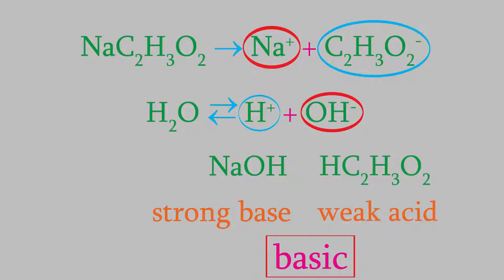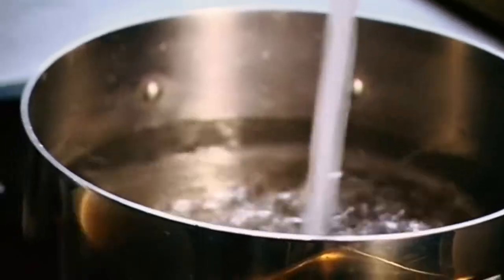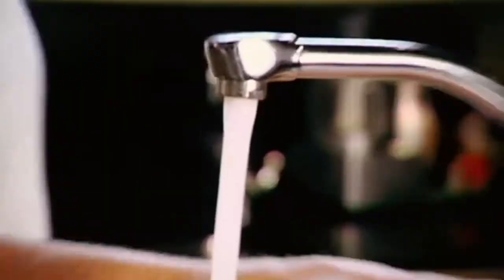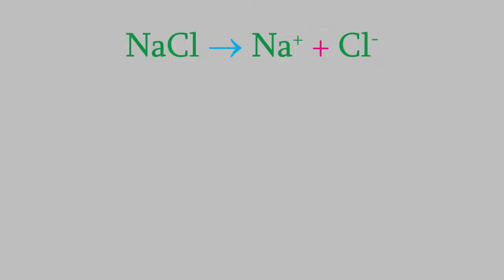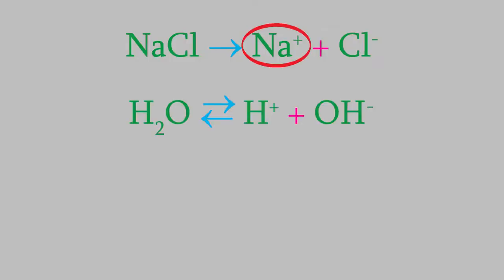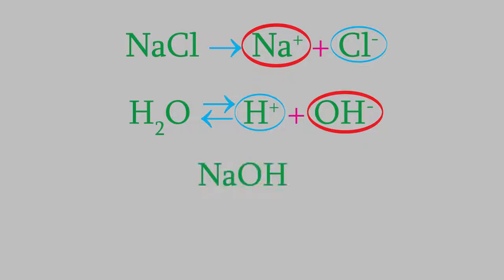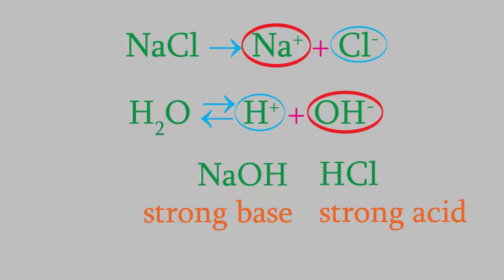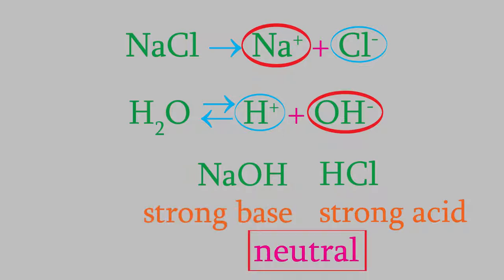Now that we know why a salt solution might be acidic or basic, we can also understand why a solution of table salt in water doesn't seem to be acidic or basic. When NaCl dissolves, we get sodium ions and chloride ions. The sodium is attracted to the negative hydroxide ions, and the chloride is attracted to the hydrogen ions. That gives us sodium hydroxide and hydrochloric acid — those are a strong acid and a strong base, so combining them gives us a neutral solution overall. A solution of sodium chloride will have a pH of pretty much 7, just like water.